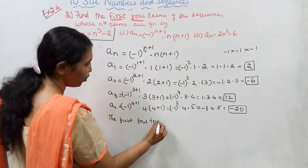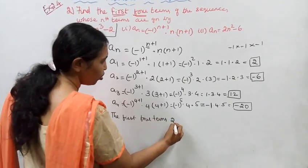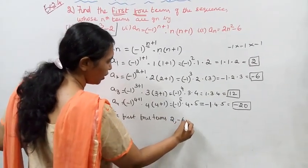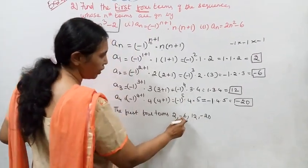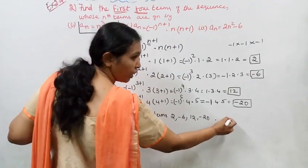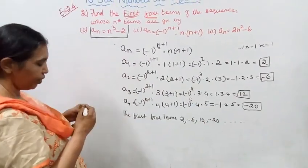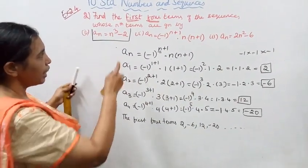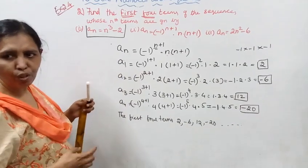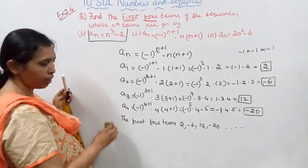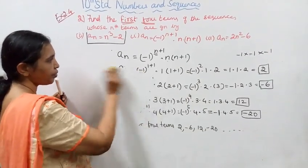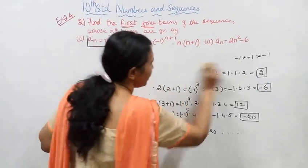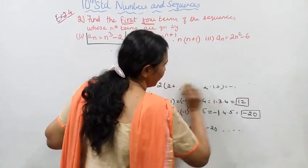The first four terms are 2, minus 6, 12, minus 20. Easy, students? Numbers and sequences - practice and get it.